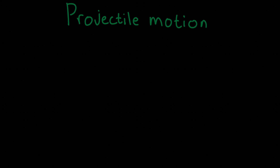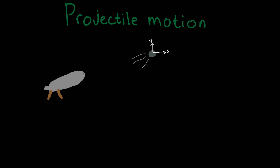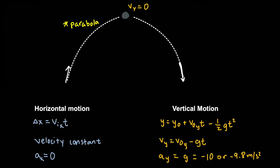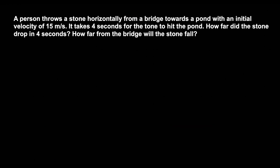Now let's move on to projectile motion — the motion of an object in two dimensions: horizontal and vertical. These problems include a cannonball launching or kicking a soccer ball. For horizontal motion, horizontal velocity stays constant because there's no acceleration horizontally. For vertical motion, gravity is negative since it points down. The vertical velocity will be zero at the maximum height of the projectile. Problem: a person throws a stone horizontally from a bridge with an initial velocity of 15 m/s, and it takes three seconds to hit the pond. What is the height of the bridge, and how far from the bridge will the stone fall?